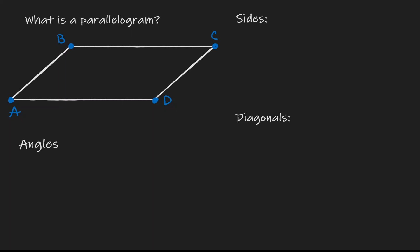Given this figure on the left-hand side, if we want to claim that this is a parallelogram, then we have to show that BC is parallel to AD — opposite sides are parallel — and AB is parallel to DC — opposite sides are parallel.